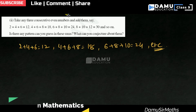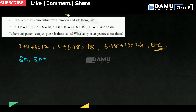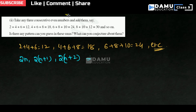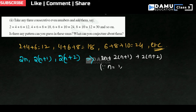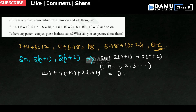It is a multiple of 2. Let us take 2n, 2(n+1), and 2(n+2). This is the pattern. Adding 2n + 2(n+1) + 2(n+2): substituting n=1, we get 2+4+6 = 12. We have got the pattern.